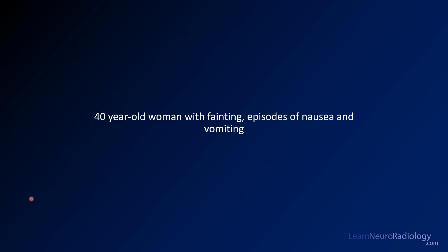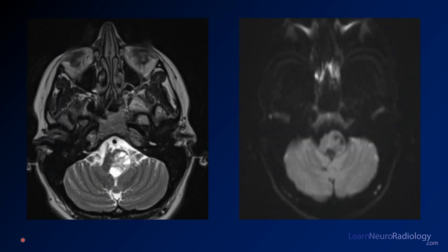We'll start with a case of a 48-year-old with fainting and episodes of nausea and vomiting. Here we have a T2 image from about the level of the lower brain stem, around the pontomedullary junction. You see a T2 hyperintense, at least partially cystic mass along the left aspect of the fourth ventricular outflow tract. On diffusion, there's not much brightness, so nothing to suggest this is a very cellular tumor.